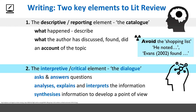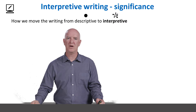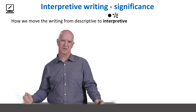The second part is super important because if we just stay at the descriptive reporting element, we run the risk of having our writing grounded in a shopping list style, where we're saying 'he noted,' 'he found,' 'she did this,' 'she discovered.' It becomes a list of ideas rather than an interpretation or a treatment of ideas, which is what a review is. So, how do we move our writing from the descriptive to the interpretive?